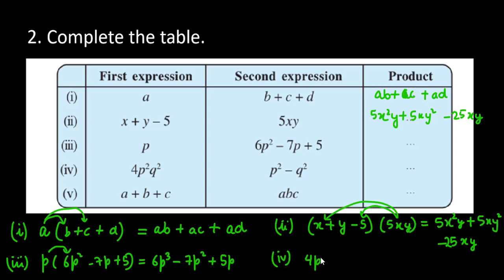Fourth part, we have is 4P square Q square and in bracket P square minus Q square. अब आप क्या करोगे, 4P square Q square को P square से मडिप्लाय करोगे. P कितनी बार होगे आपके पस? 4 times. Q कितनी बार है? 2 times.